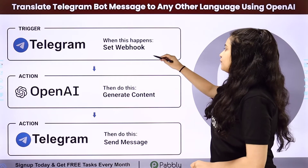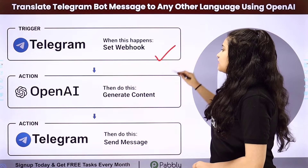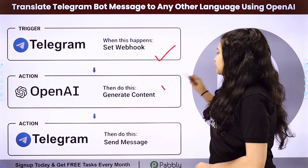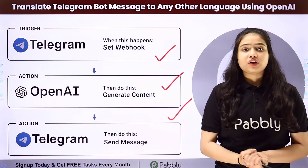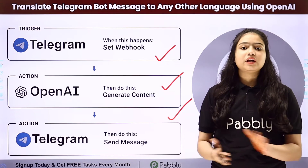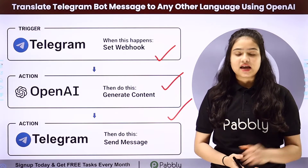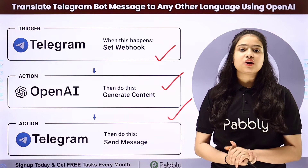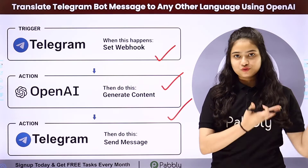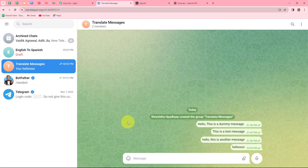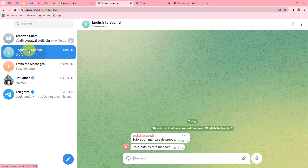Here we have Telegram in our trigger, and then in the actions we have OpenAI and Telegram once again. We are going to connect all of them by using Pably Connect in order to automate this entire process. To learn this entire automation step by step, we are going to learn how to automatically translate Telegram messages into another language by using OpenAI.